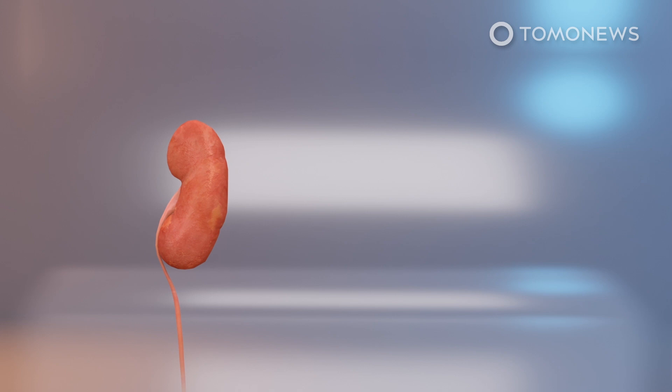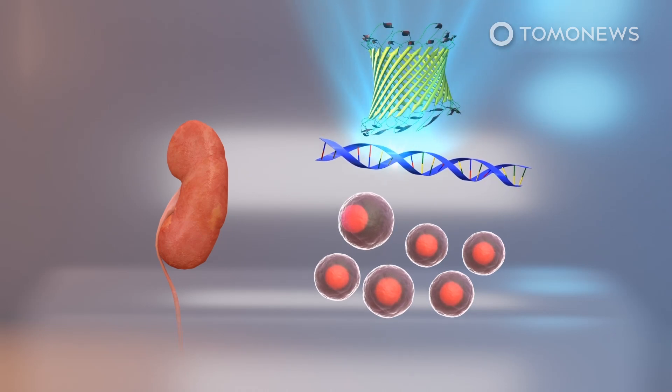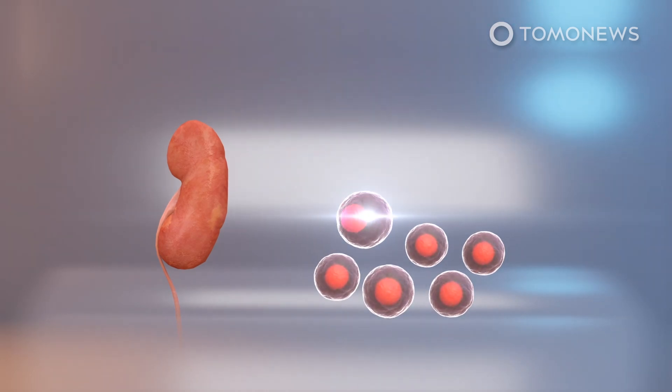In a news release, the scientists say they took human embryonic kidney cells and introduced genes that express reflectin. These cells are then cultured and examined under a microscope.